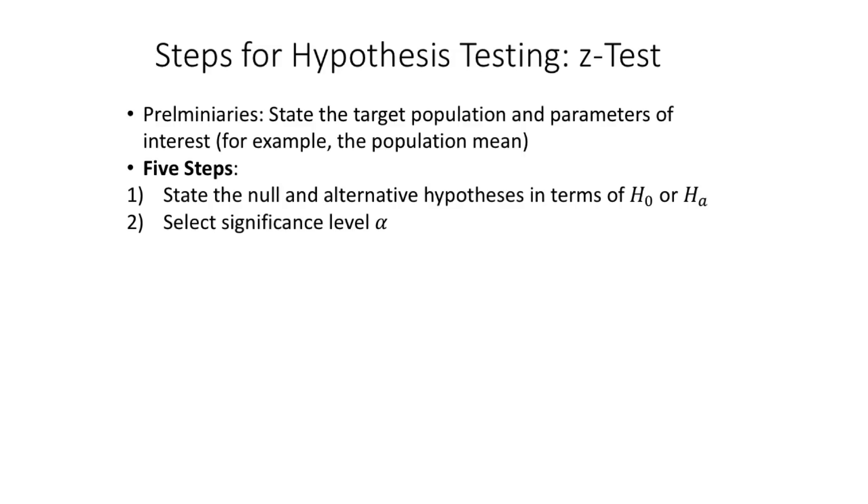Then you select a significance level alpha. Alpha, we typically set to 0.05 by convention in the social sciences. But you will see that in some context, in some research fields, people use a different level of alpha. That reflects a different perspective on how willing people are to make a type one error. In some fields, they don't want to make a type one error very frequently, so they set alpha to a lower level, alpha to 0.01 rather than 0.05.